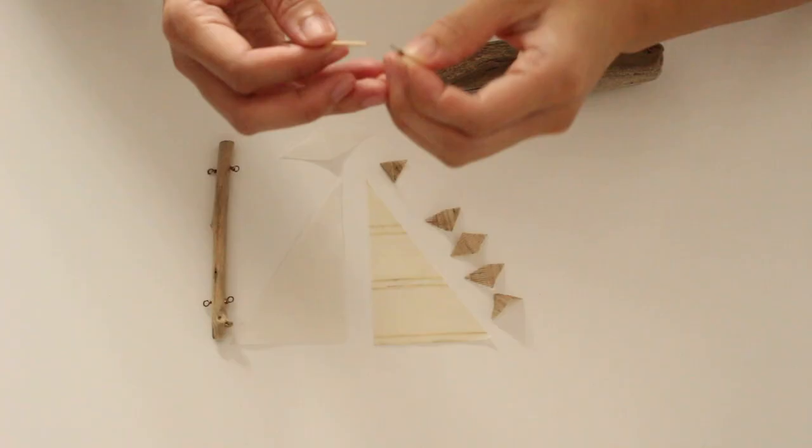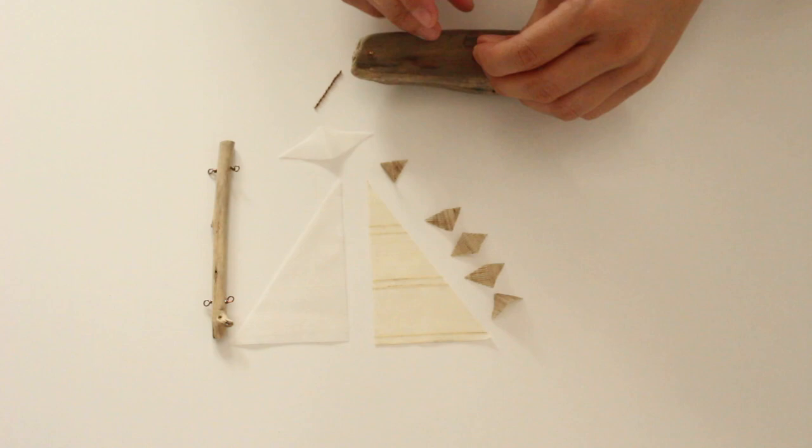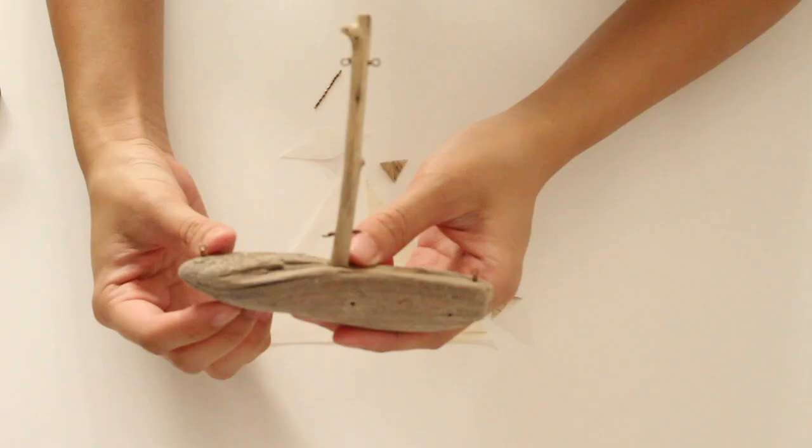Glue the wrapped loops to the driftwood and attach the mast to the center using a piece of wire as a dowel. Glue the twisted wire inside the folded flag and attach it to the top of the boat.